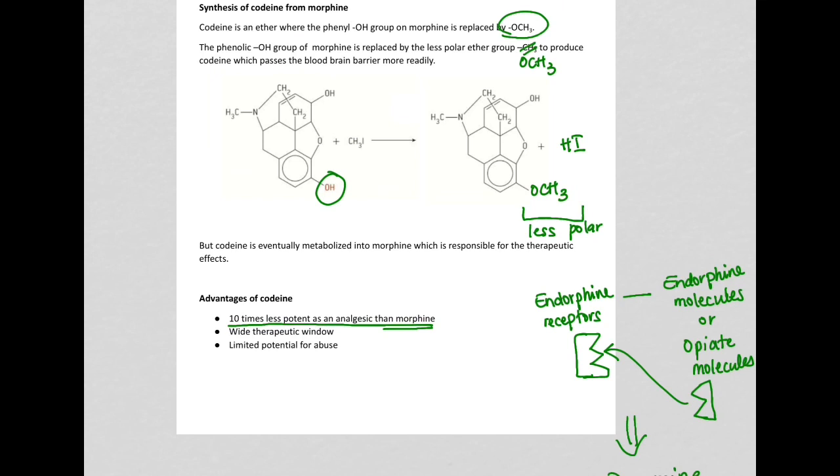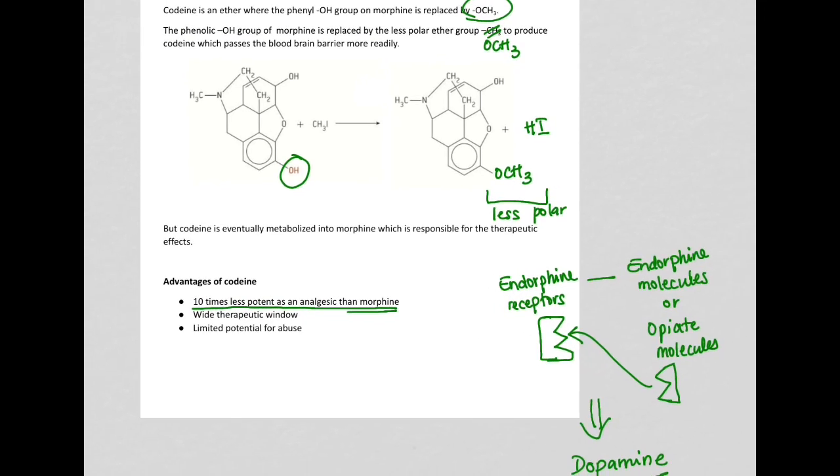What happens is that only 10% of all codeine that is consumed is converted to morphine. And those endorphin receptors have a greater affinity for morphine rather than for codeine. They will prefer to bind with morphine rather than codeine. Because only 10% of codeine is converted to morphine, it's only 10 times less potent than morphine.